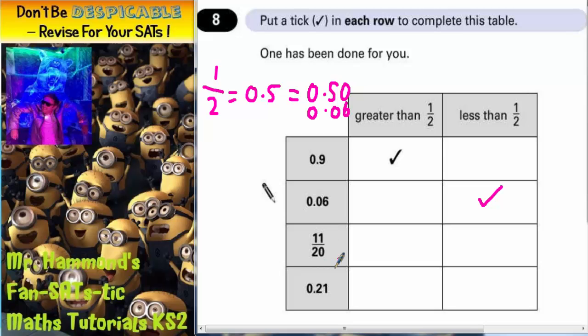11 twentieths. Well, if we're talking about twentieths, a half, one half of 20 would be 10 twentieths.